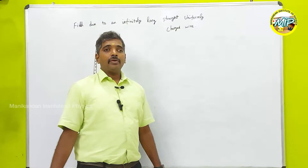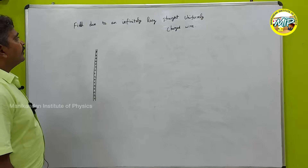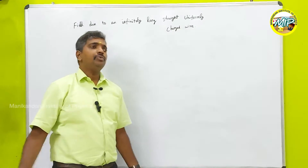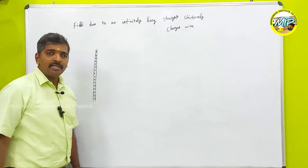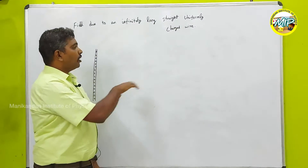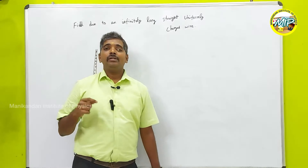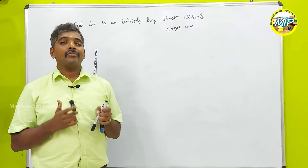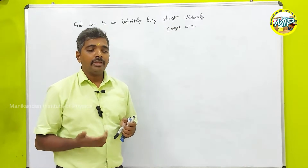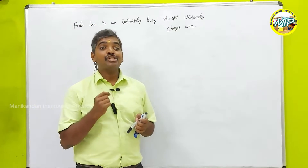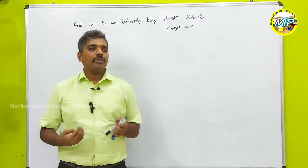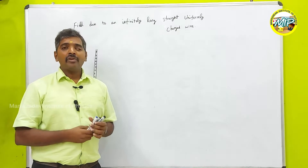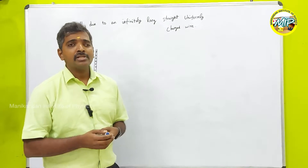Today we are going to discuss the electric field due to an infinitely long straight uniformly charged wire with linear charge density lambda. In the last class we discussed Gauss's law: the total flux through a closed surface is directly proportional to the net charge enclosed within the Gaussian surface and inversely proportional to epsilon naught. We did some NCERT problems, so if you haven't watched that video, the link is in the description.